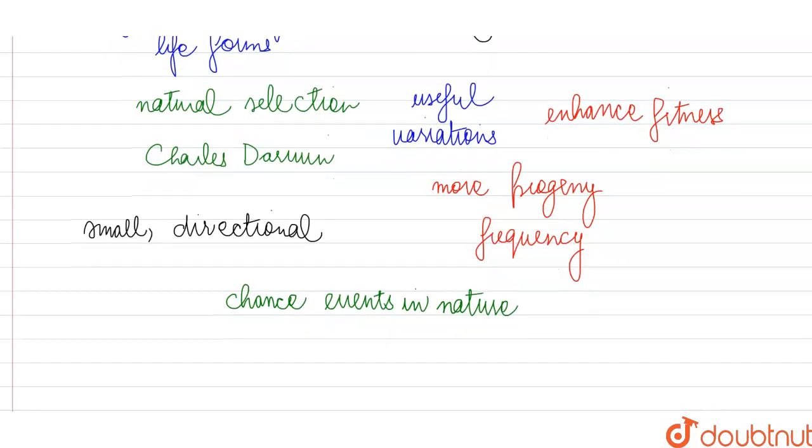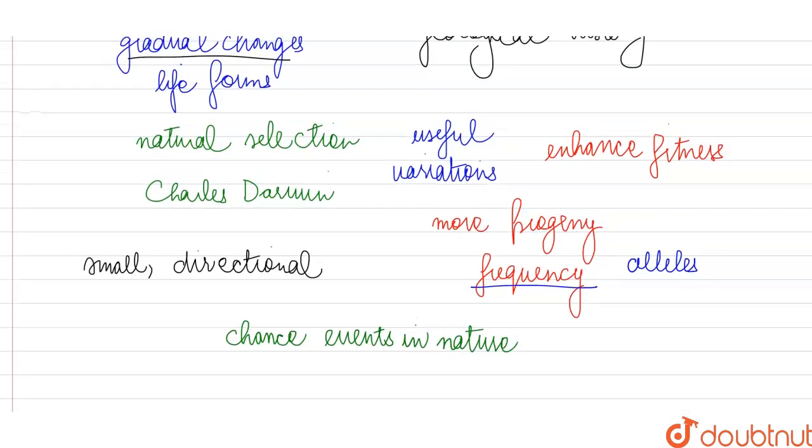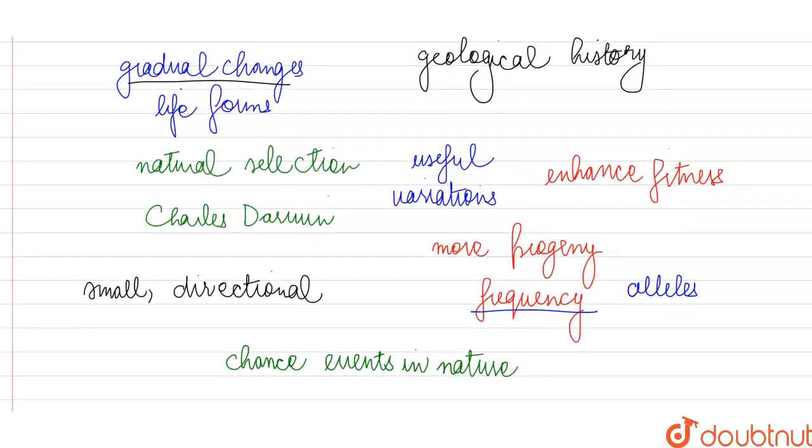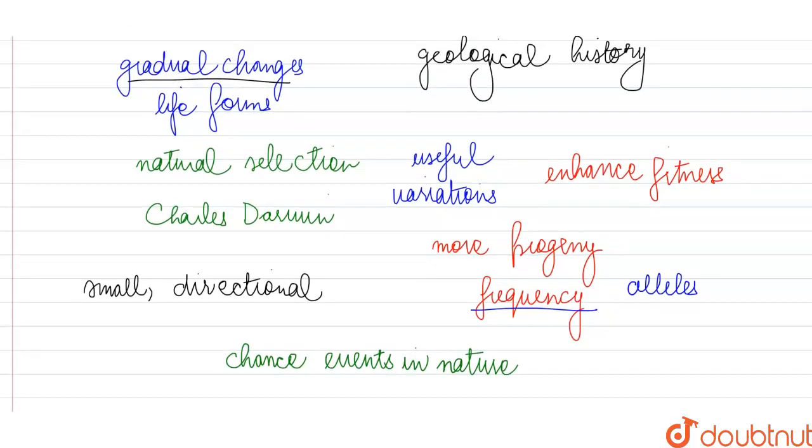Many times, the frequency of alleles in a population or the genetic composition of a population changes because of some natural calamity, some natural disaster, some kind of accident, some disease. So population characteristics might keep changing and because of many factors in the surroundings also, in the environment also, the life forms might arise or disappear.